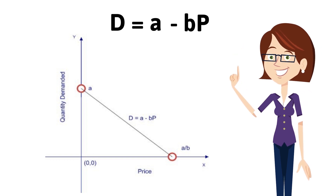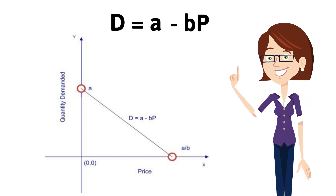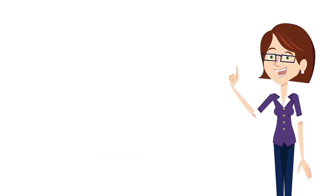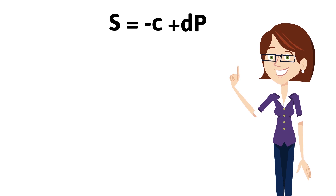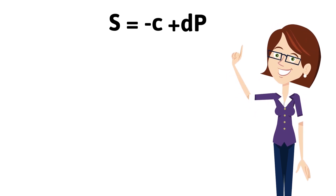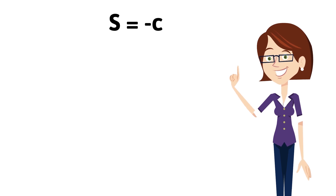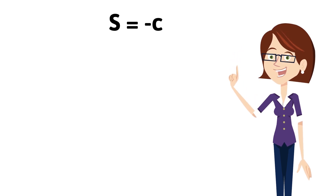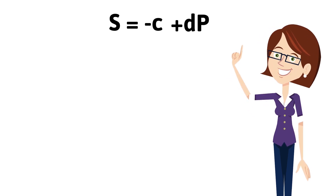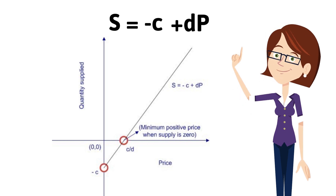The positive relationship between supply and price is usually expressed in the form of an equation: S = −c + dP. If P is 0, S is some negative value. If P increases, S increases, and if P falls, S also falls, thus giving rise to an upward sloping straight line.